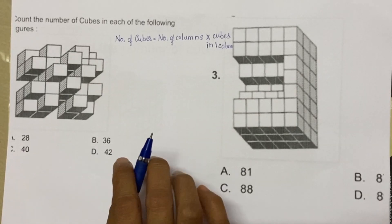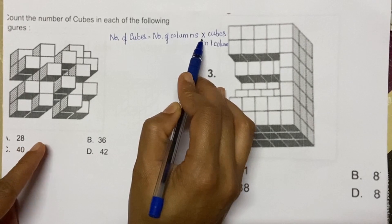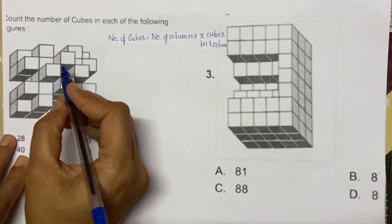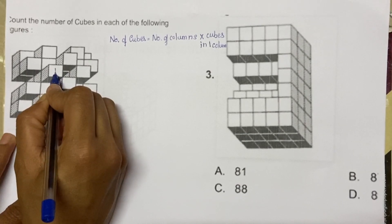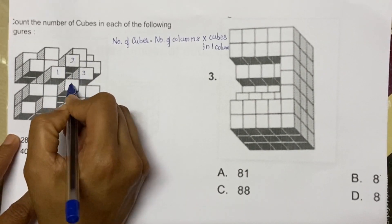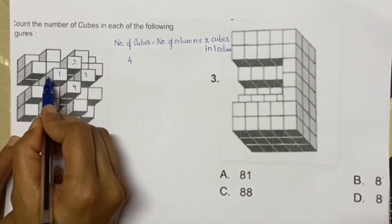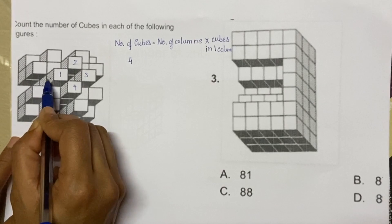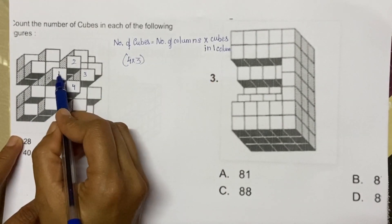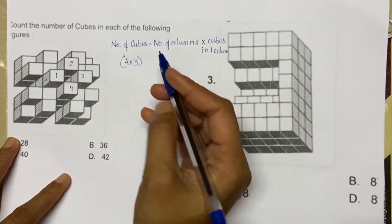To find the cubes, this is the formula: we have to find the number of columns and multiply with the cubes in one column. So here let's calculate the number of columns — 1, 2, 3, 4. So 4 columns, and in one column there are 1, 2, 3 — 3 cubes. So 4 into 3. Columns 4, in one column there are 3 cubes, so multiplied by 3.